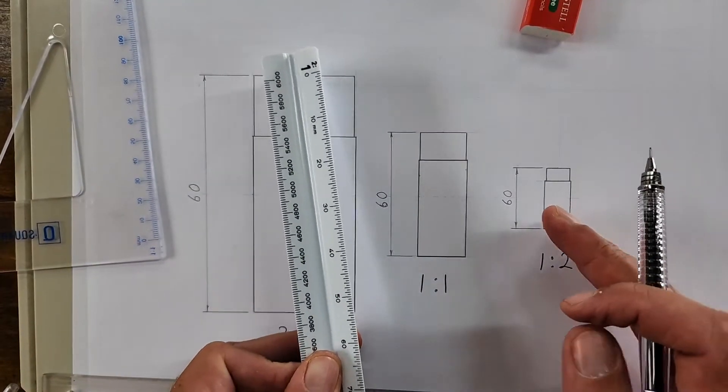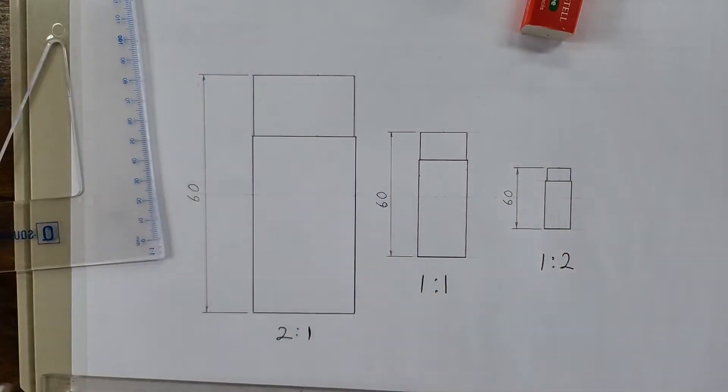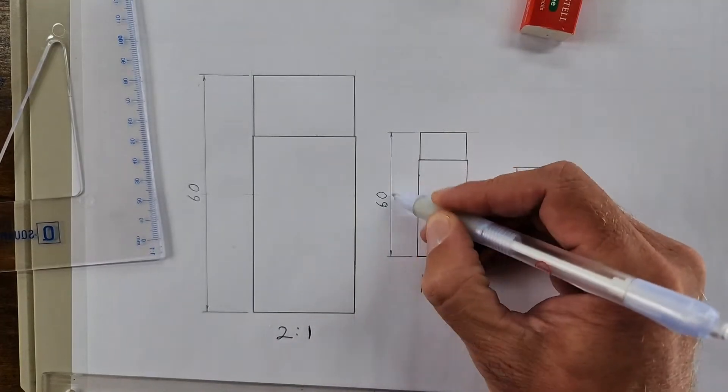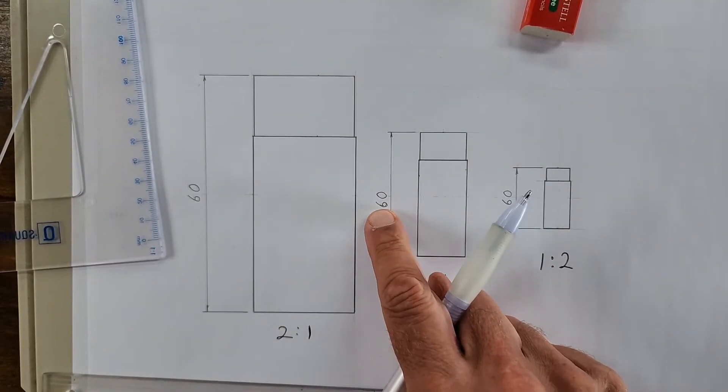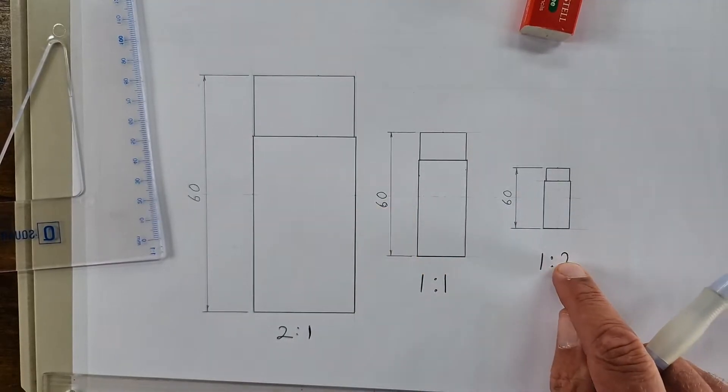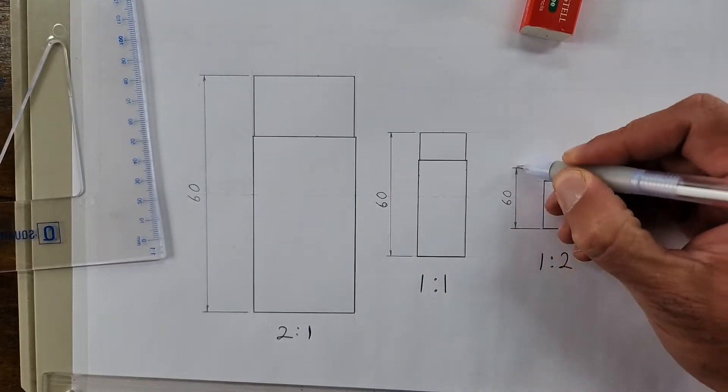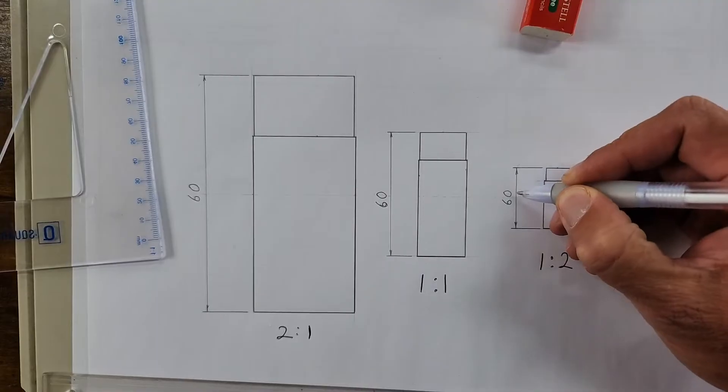So that's how easy you can work yourself out a scale if you do not have a scale ruler and you need to know how do I change scales. So they give you the measurement 60. If it's half a scale, it's always going to be 60 divided by 2, and then your actual measurement that you use to draw is going to be 30.